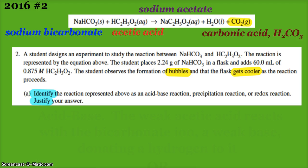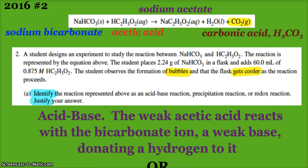So identify the reaction above as acid-base, precipitation, or redox. Justify your answer. Well, sodium bicarb is a base, acetic acid is an acid, and as we've mentioned, there was a hydrogen transfer. Even though you don't see it directly, it did make carbonic acid. So you can say the weak acetic acid reacts with the bicarbonate ion, a weak base, donating a hydrogen to it.